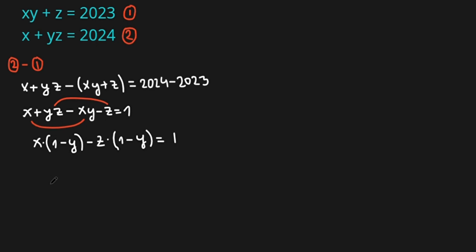So (1 minus y) is a common factor here. We can take it out, and we have (1 minus y) times (x minus z), all equals 1.